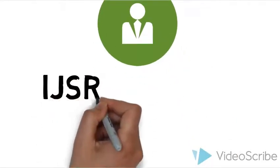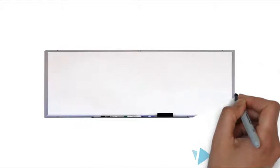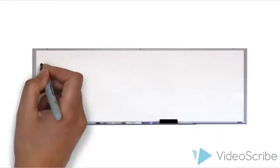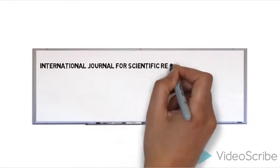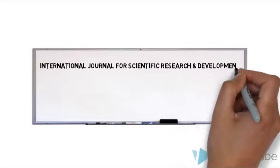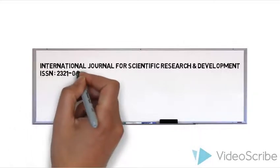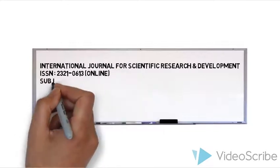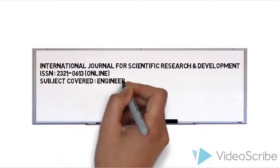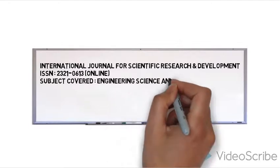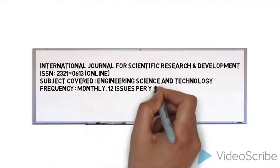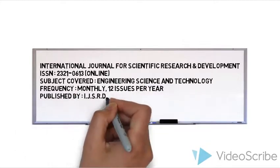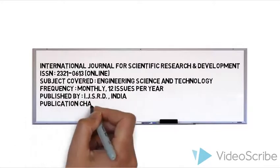Now let's take a look on IJSRD profile. The full form of IJSRD is International Journal for Scientific Research and Development, ISSN 2321-0613 online. Subject covered by IJSRD is engineering, science and technology. Frequency of publishing issues is monthly, 12 issues. Published by IJSRD India, publication charges 750.